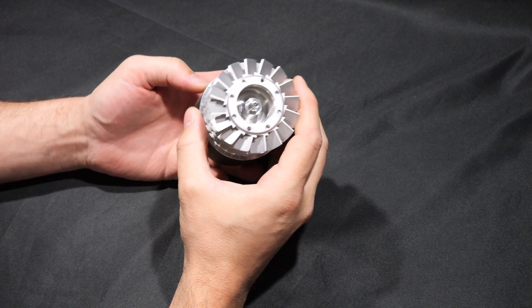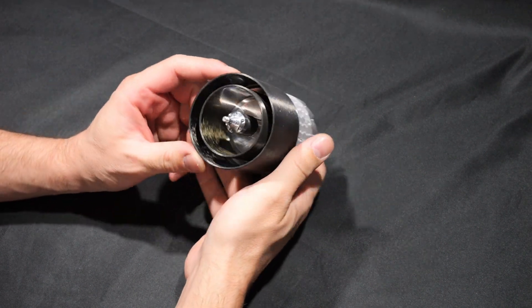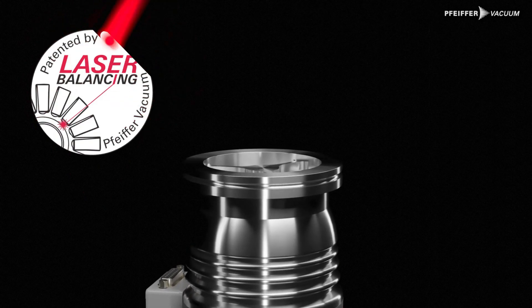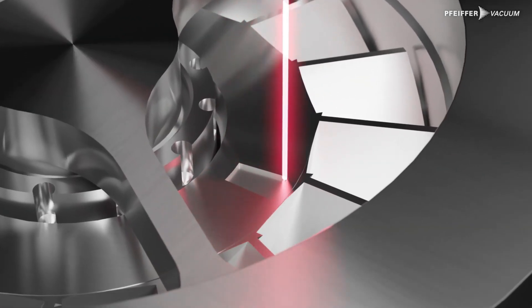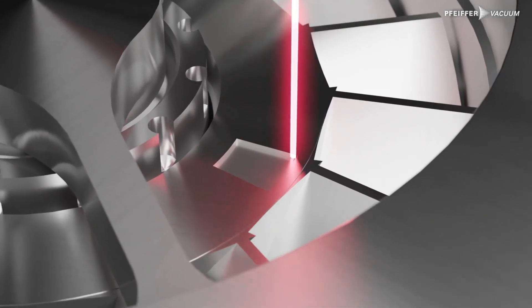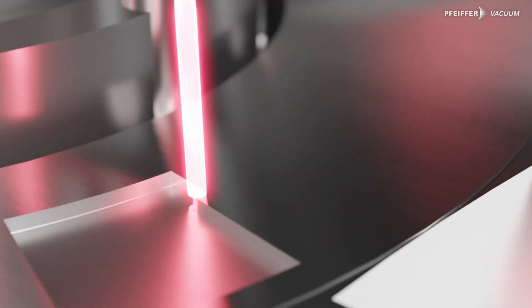In newer models, such as the HiPace 80 Neo, this process is no longer accomplished with screws but rather using a laser. As the rotor spins, the imbalance is measured and material is precisely removed with a laser until the rotor is perfectly balanced.